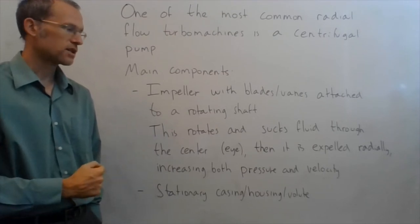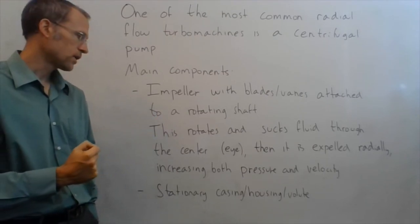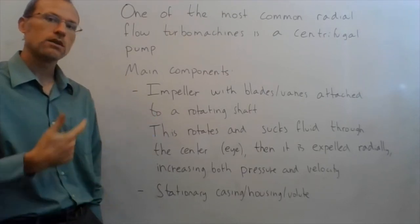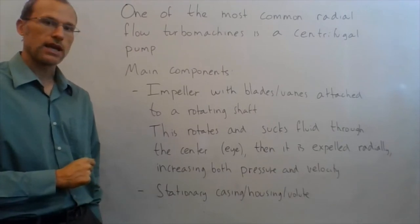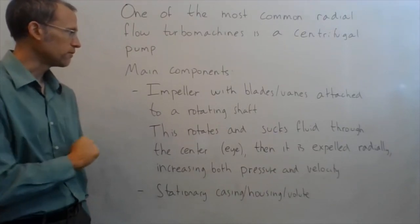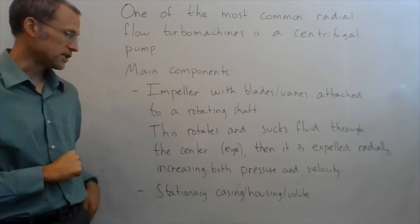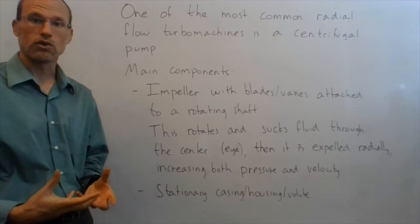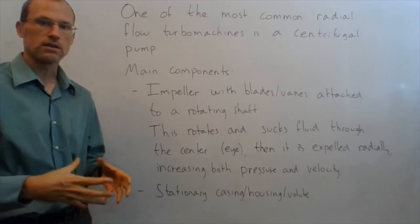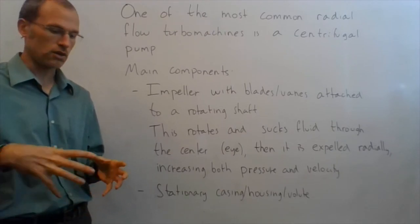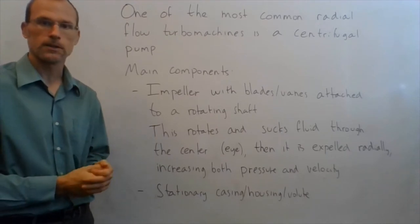It spins the fluid around, sucks in fluid through what's called the eye, and then expels it radially, increasing both its velocity and pressure. The other part of my centrifugal pump is a stationary casing or housing, or also called a volute, so that's the stationary part of it that goes around it to keep all the fluid in before it gets shot out radially.